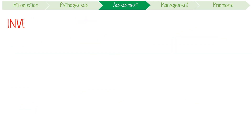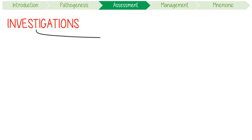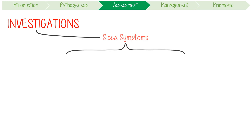Further investigation for Sjogren's syndrome is required if a patient has significant sicca symptoms. A diagnosis requires both evidence of an underlying autoimmunity and objective glandular changes.